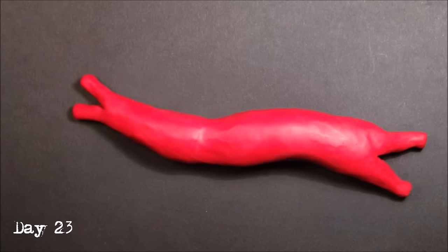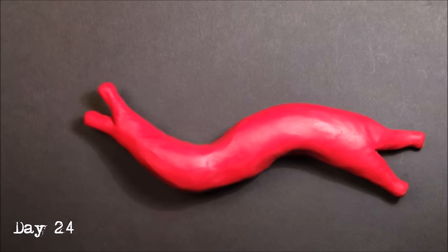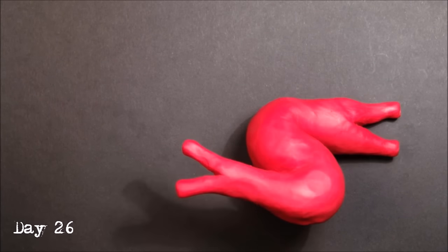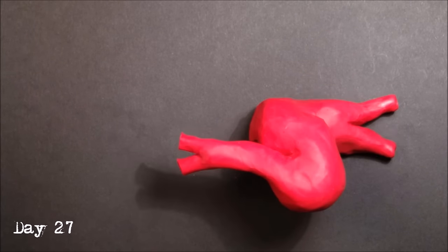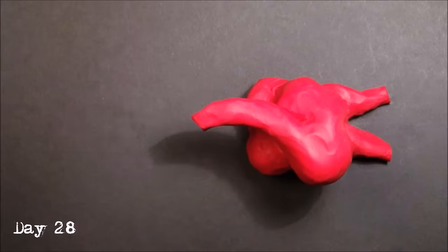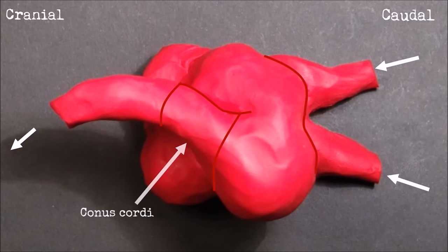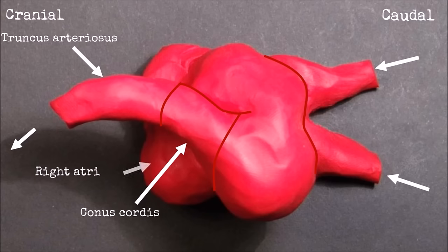At 23 days, the heart tube starts to fold and loop due to differential growth. The cephalic end bends to the right and moves ventrally and caudally relative to the sinus venosus, which moves cephalad and dorsally. The folding of the heart tube takes place over only six days, so by day 28 the heart tube has the configuration that we see here. It will also have increased in size.